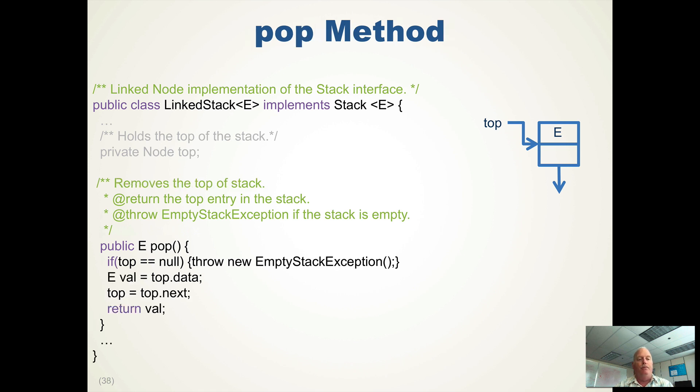Then we'll pop. Again, we check to see that the stack's not empty. Then we get the data from the stack. And since we're popping the stack, we need to traverse top to top.next. That will move it down. And then we return the value, and now that node is no longer pointed to, so it will be garbage collected. And the stack now is one smaller, pointing to the next thing, the new top of the stack.